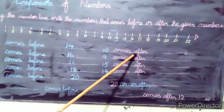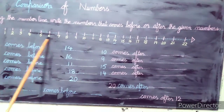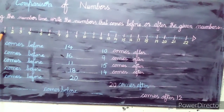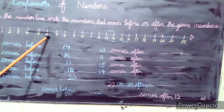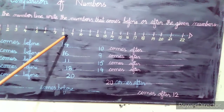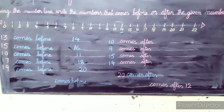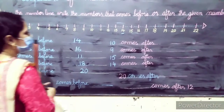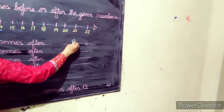What comes after? Let's look at the number line. Starting from 0: 0, 1, 2, 3, 4, 5, 6, 7, 8, 9, 10. What comes after 9? The answer is 10. So write 10 here — 9 comes before 10, so 10 comes after 9.